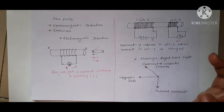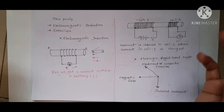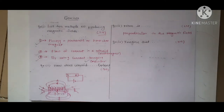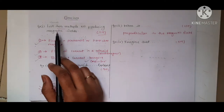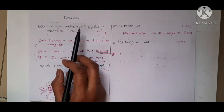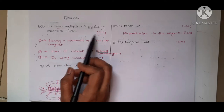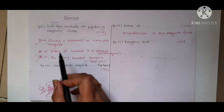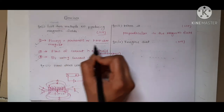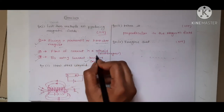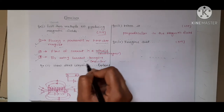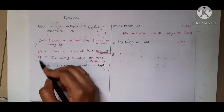Now let's discuss some important exercise questions. Question number 7 from page 240: list two methods of producing a magnetic field. If there are two methods, it's a two-mark question; three methods, three marks. First, you can generate a magnetic field through a horseshoe magnet. Second, through a solenoid. Third, through a current carrying conductor. So these are three points for your answer.